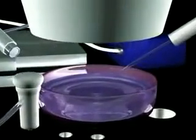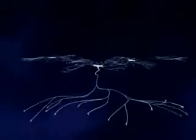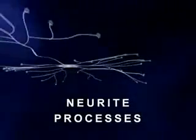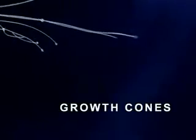To better understand mercury's effect on the brain, let us first illustrate what brain neurons look like and how they grow. In this animation, we see 3 brain neurons growing in a tissue culture, each with a central cell body and numerous neurite processes. At the end of each neurite is a growth cone where structural proteins are assembled to form the cell membrane.